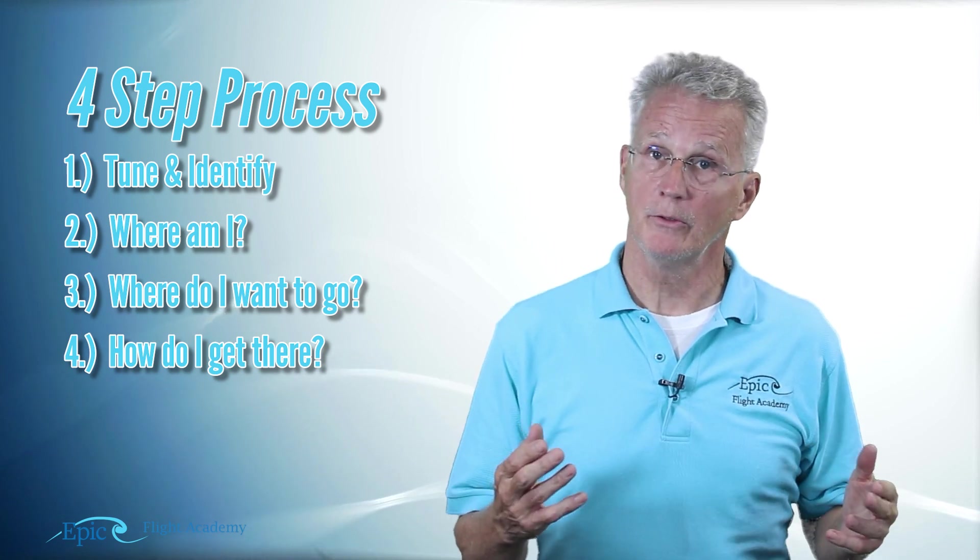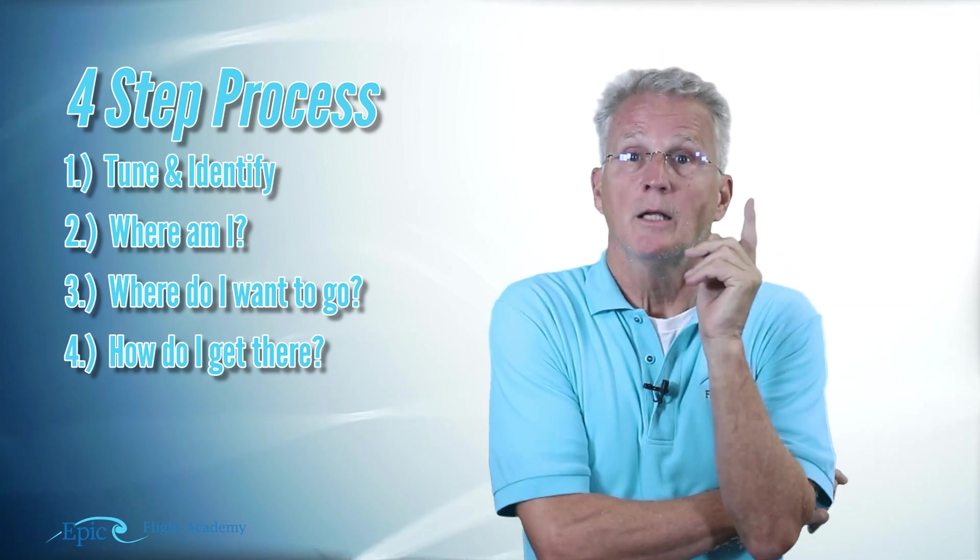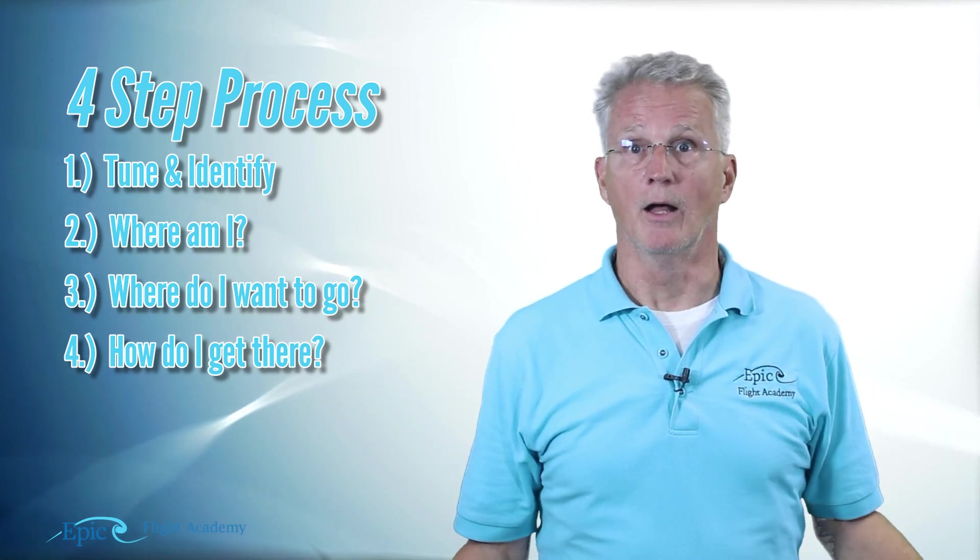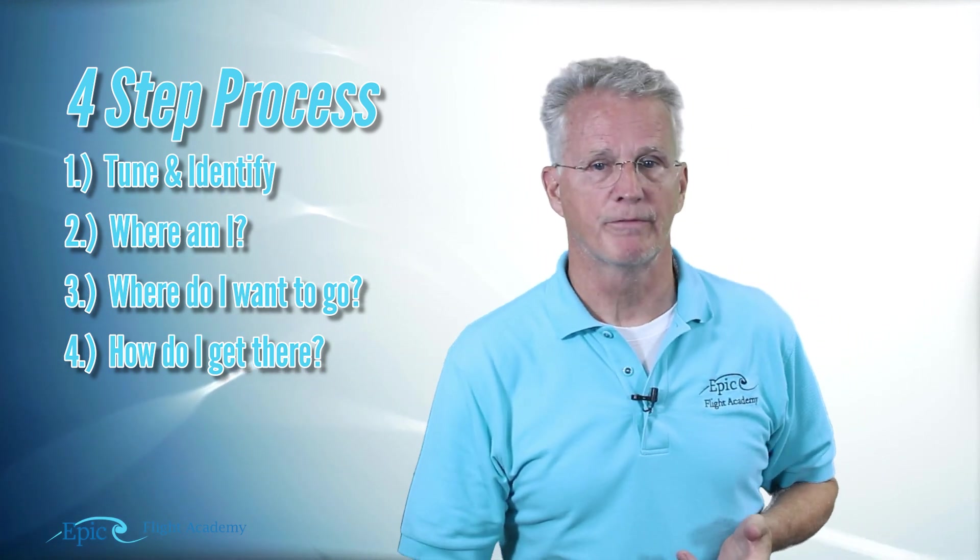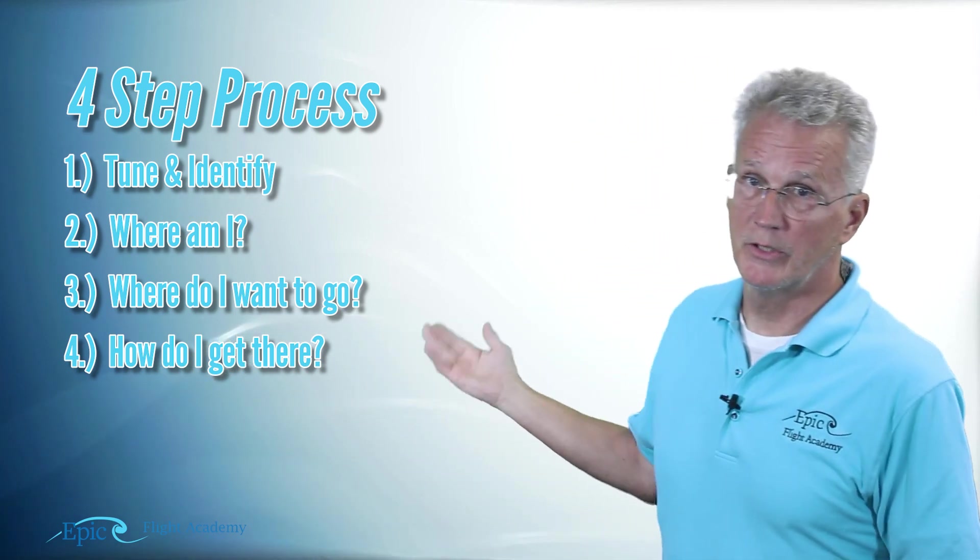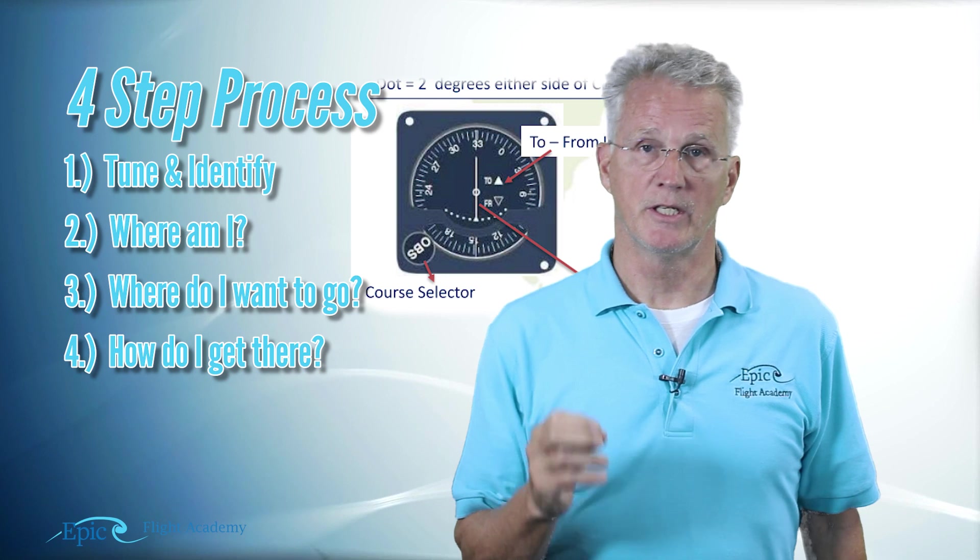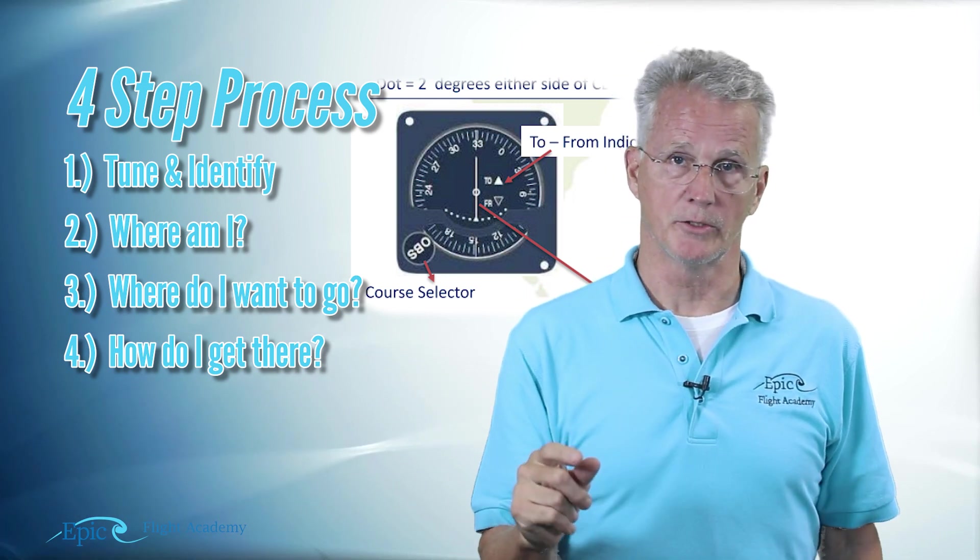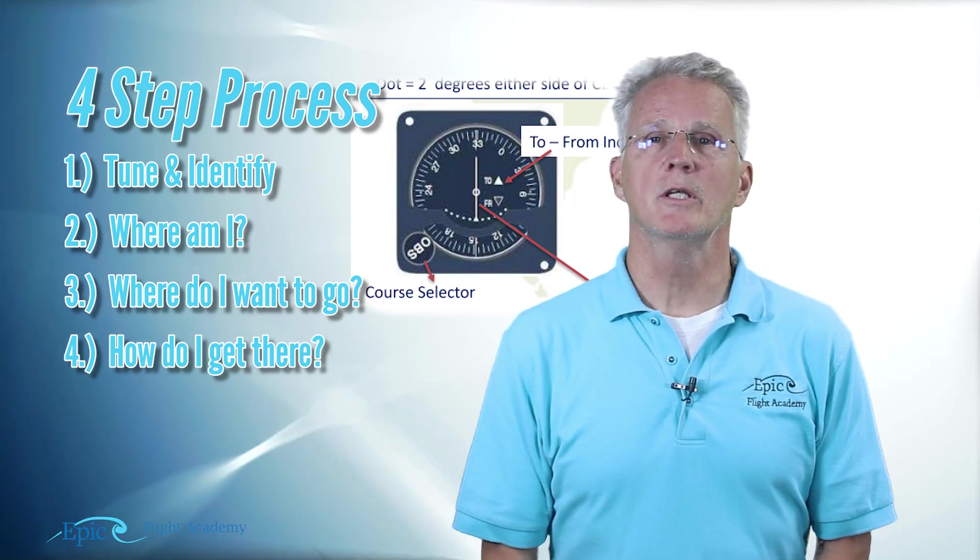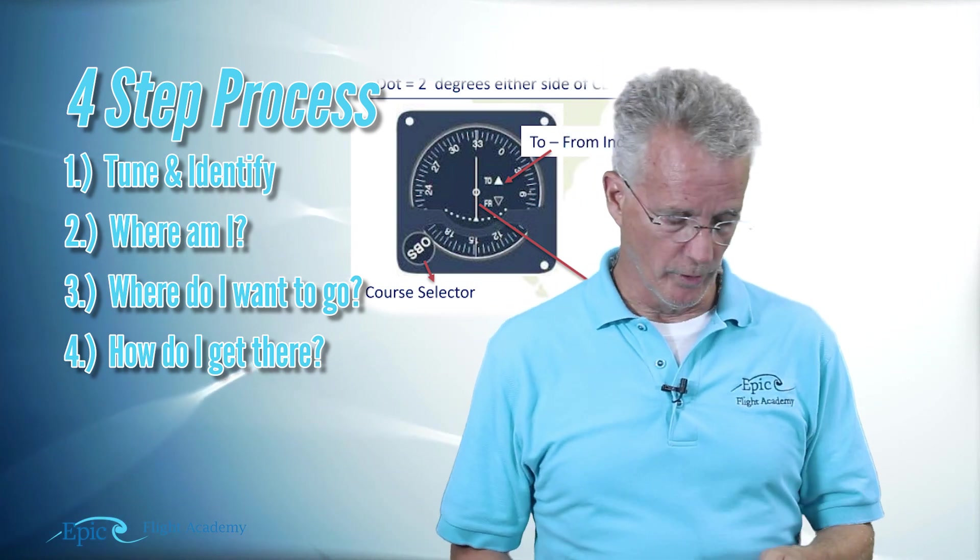That takes me to my third question: where do I want to go? Let's say, for example, I want to fly directly to that station. Now I answer my fourth question: how do I get there? You can see that in the example from our online course. I'm going to center that CDI with a TO indication because I want to go to the station. So you see the importance of using these four steps to help navigate with the VOR.